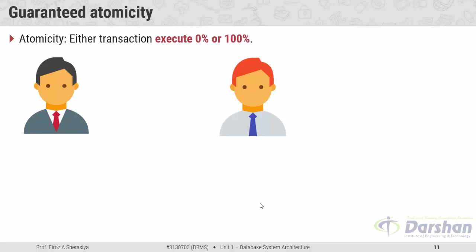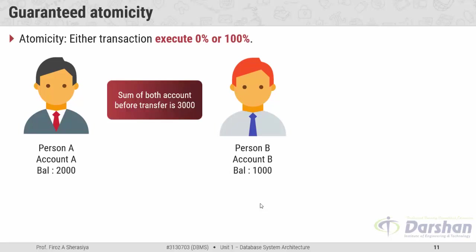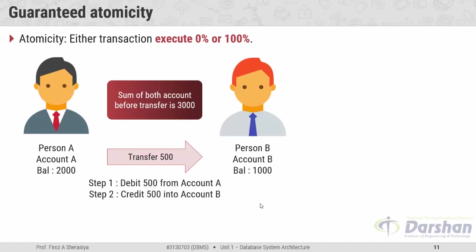Suppose we have two persons, person A and person B. Person A has account A with a balance of 2000, and person B has account B with a balance of 1000. Before starting the transaction, the sum of both accounts is 3000. We want to perform a transaction to transfer Rs. 500 from account A to account B. To perform this transaction we need two steps: step 1, debit Rs. 500 from account A; step 2, credit that 500 into account B.